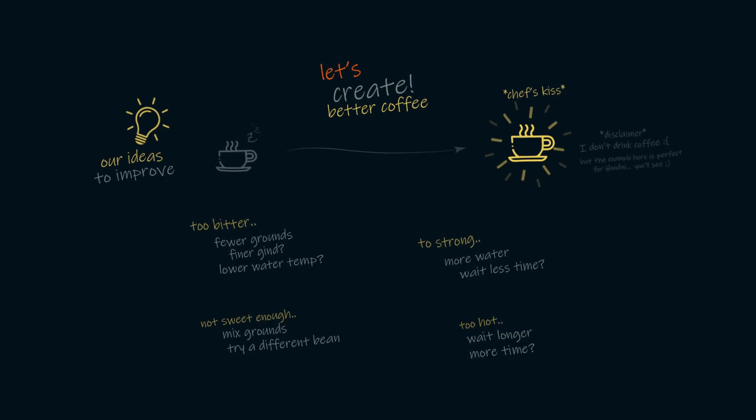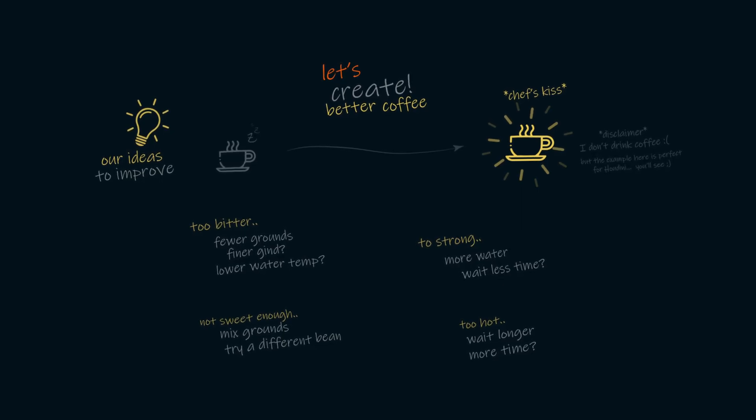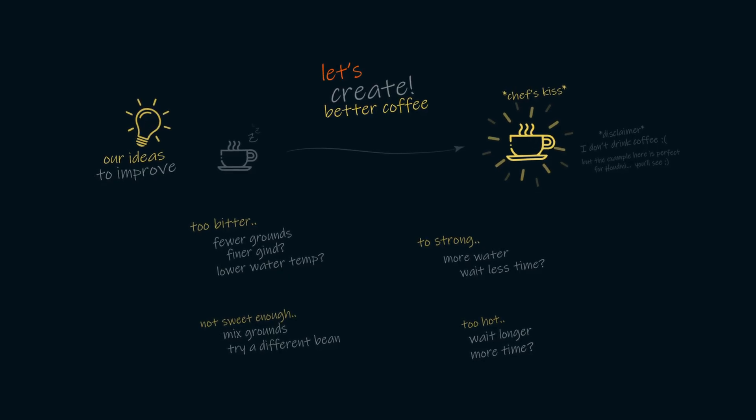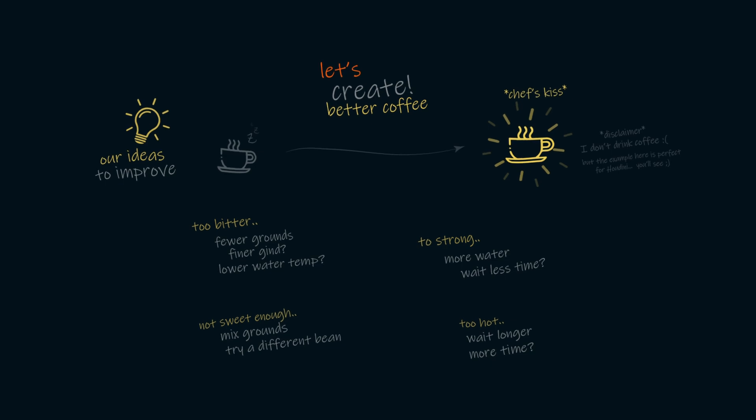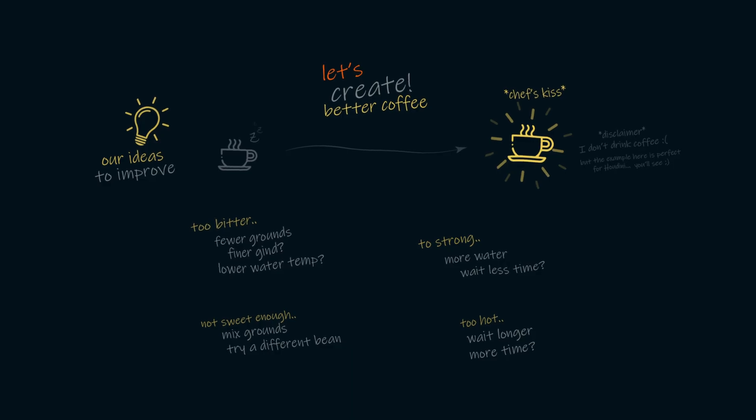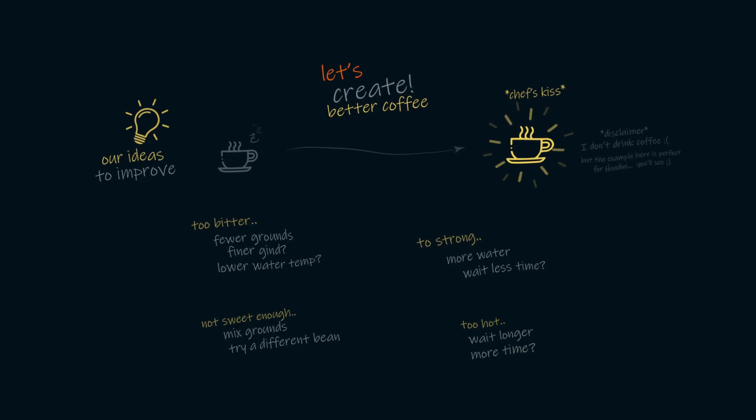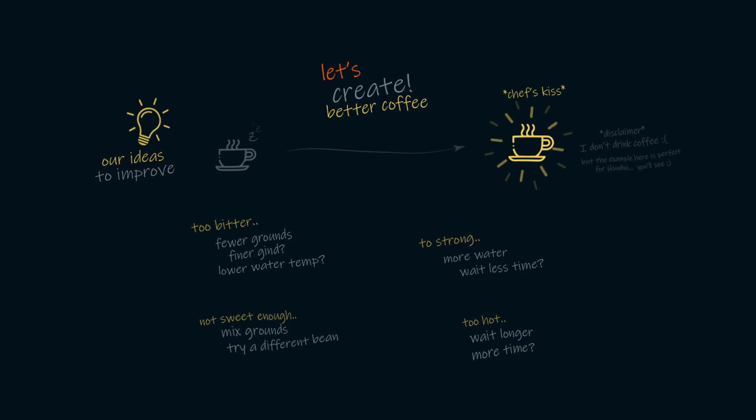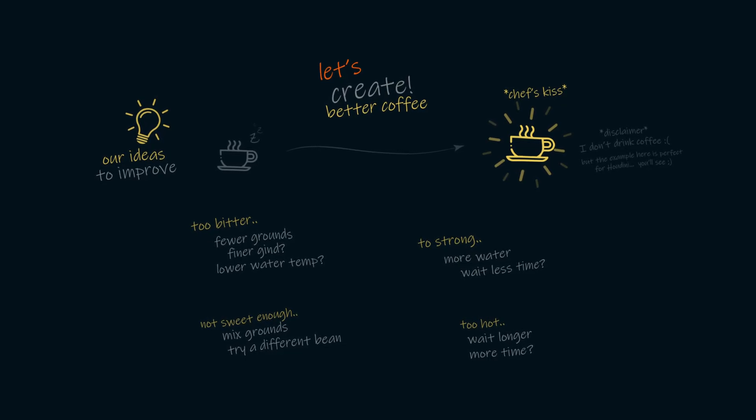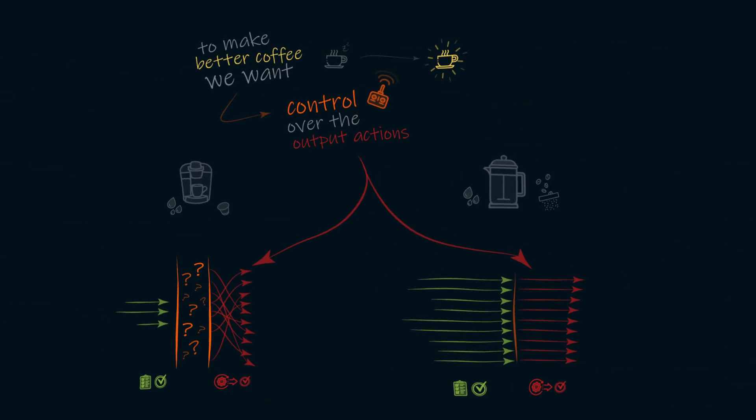If the cup of coffee was too bitter, we could maybe change the temperature of the water we added. Or we could make the grounds more coarse as we grind them. We could mix two types of coffee beans, or even three or four, if we wanted our own perfect cup. We could let the water sit with the grounds for more time, or maybe even less time. There's probably dozens or hundreds of things we could choose to do, but the key idea here is that to get better coffee, we'll want to control exactly what happens in the coffee-making process. Or, in other words, we'll want to have exact control over the output actions that are taking place.